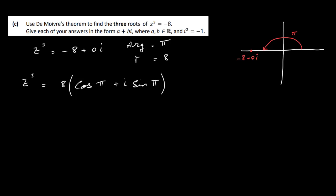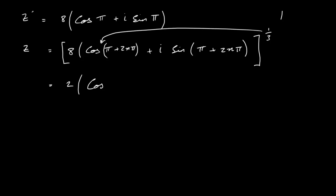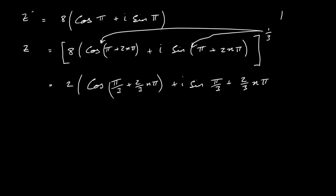Rewriting in polar form: z cubed equals 8 times cos pi plus i sine pi. To find the cube root of both sides, we write the general polar form: z equals 8 to the power of one third times cos of pi plus 2n pi over 3 plus i sine of pi plus 2n pi over 3. The cube root of 8 is 2, so z equals 2 times cos of pi over 3 plus 2n pi over 3 plus i sine of pi over 3 plus 2n pi over 3.